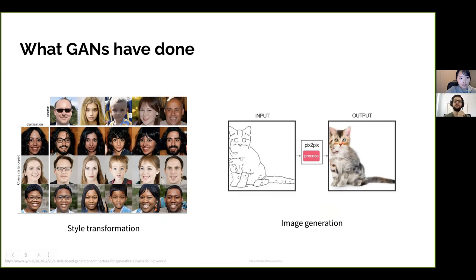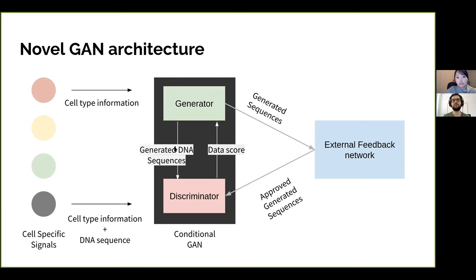GANs have been used for style transformations and image generation from specific segments, such as training on cats to learn cat ears, eyes, and nose. Inspired by that, my GAN takes in cell type information for the generator and generates cell-type-specific DNA sequences. The discriminator is fed cell type information and DNA sequences to learn what cell-specific DNA sequences look like.